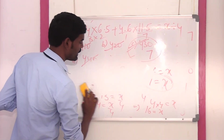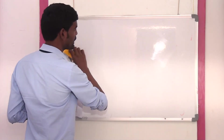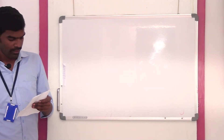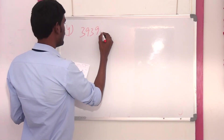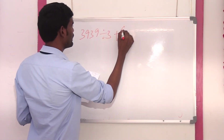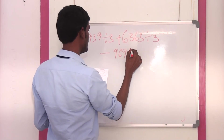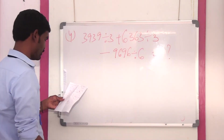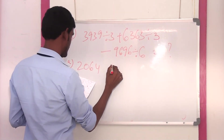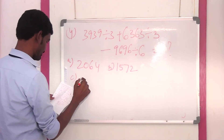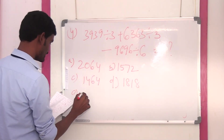I hope this is clear. Once again: please use this method only when there is a 'none of these' option, and don't use it in approximation calculations. Next question: 3939 ÷ 3 plus 6363 ÷ 3 minus 9696 ÷ 6. Options: A is 2064, B is 1572, C is 1464, D is 1818, E is 1568.